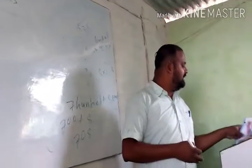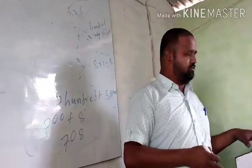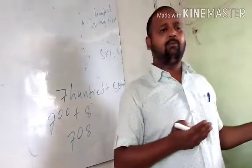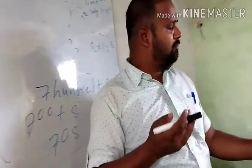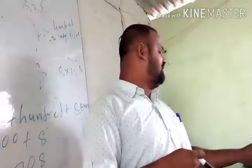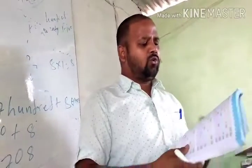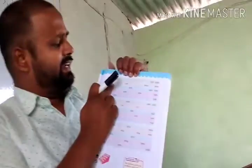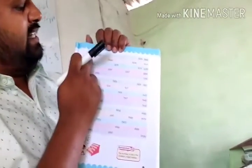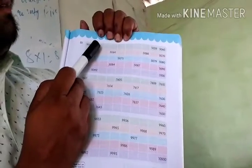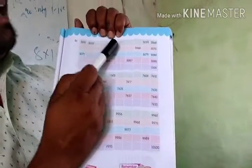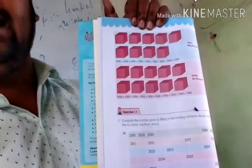Students, we have to learn place value — क्या होता है place value? अलग-अलग numbers से number formation कैसे करते हैं? आपका first exercise 1.1 होगा जिसमें columns भरने हैं। जैसे कि 5,051 है, 5,052 है — तो इसके बाद का number आप आसानी से भर पाओगे। Exercise 1 और 2 आप आसानी से भर लोगे।